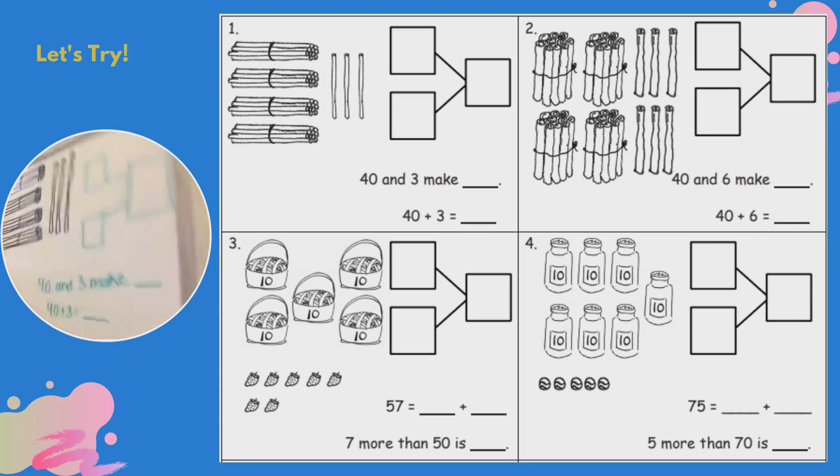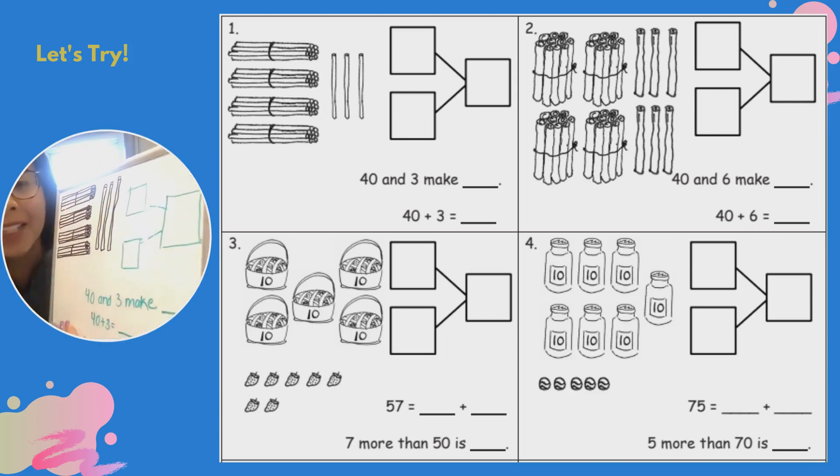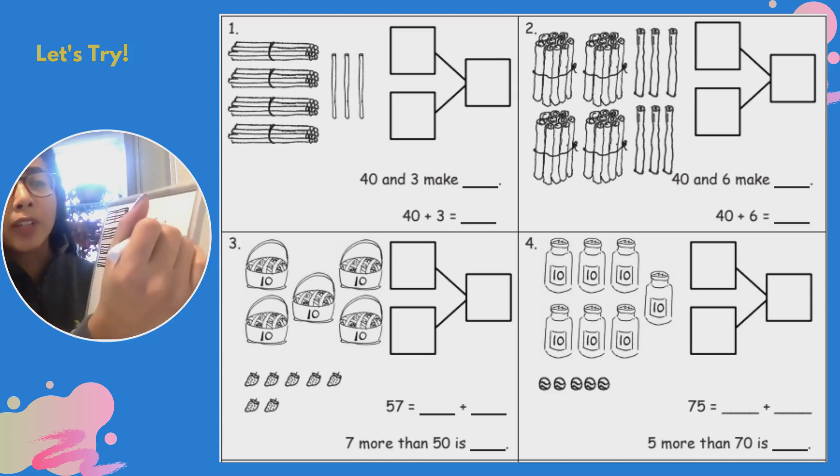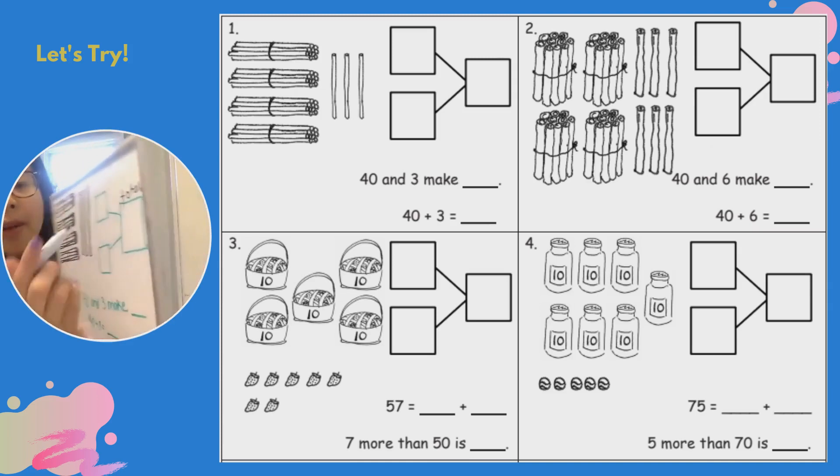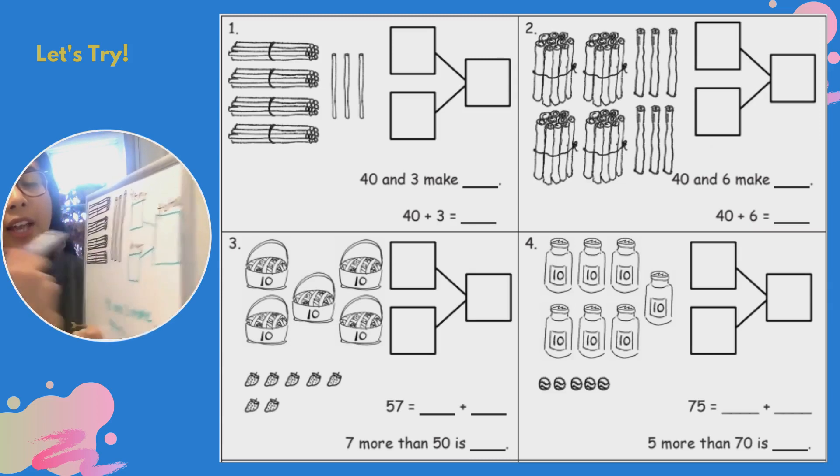So if I want to fill out my number bond just like we did before, I have to have my total and then my two parts, my tens and my ones. So I can label my number bond too so I don't forget. I'll have my total, my tens and ones that make up my total. Those two parts make up my total.